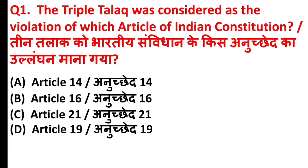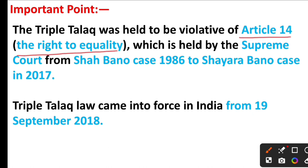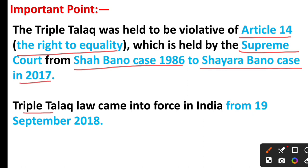The Triple Talaq was considered as the violation of which Article of Indian Constitution? The answer is Option A, Article 14. The Triple Talaq was held to violate Article 14, the right to equality, as held by the Supreme Court from the Shahbano case 1986 to the Shahbano case in 2017. The Triple Talaq law came into force in India from 19 September 2018.